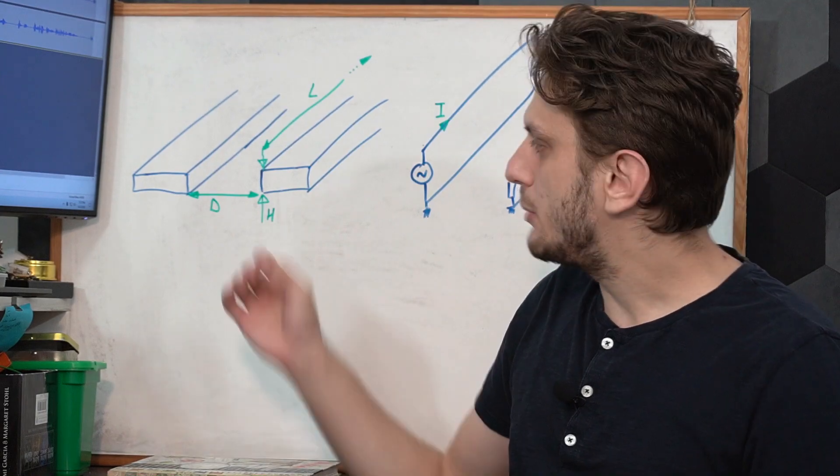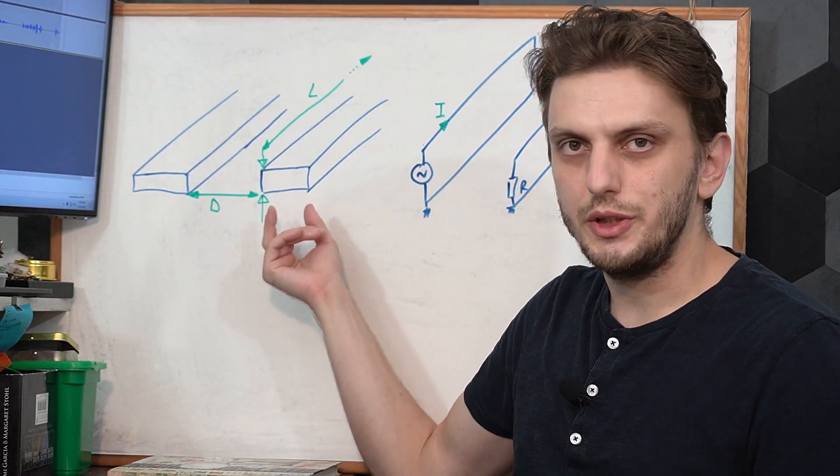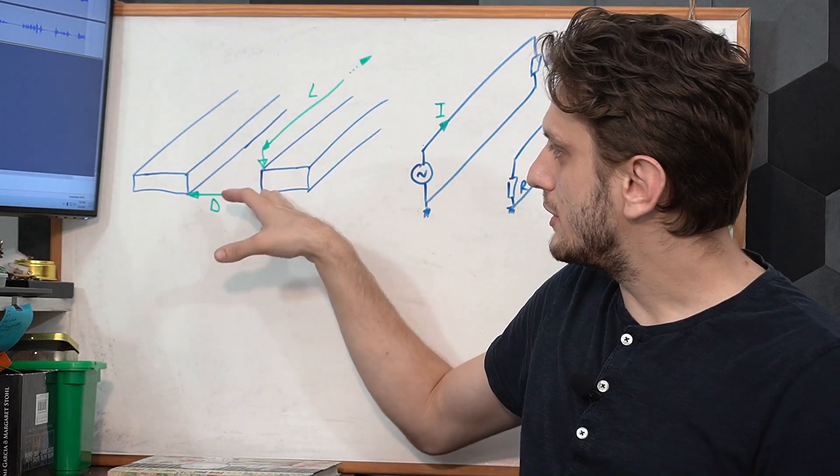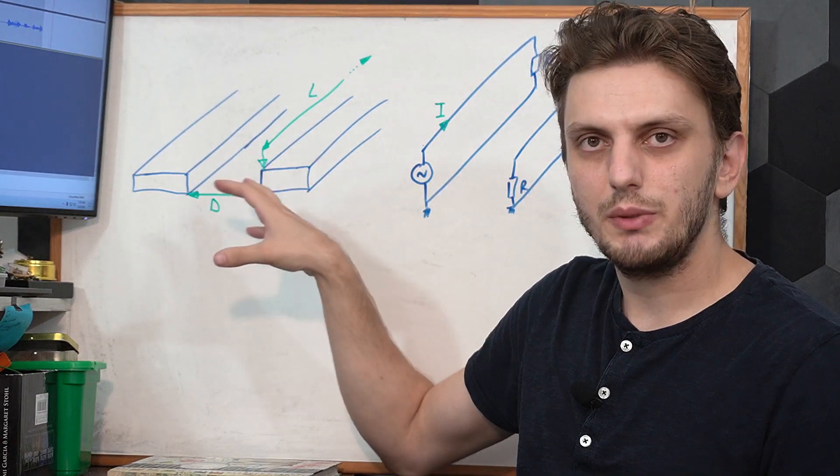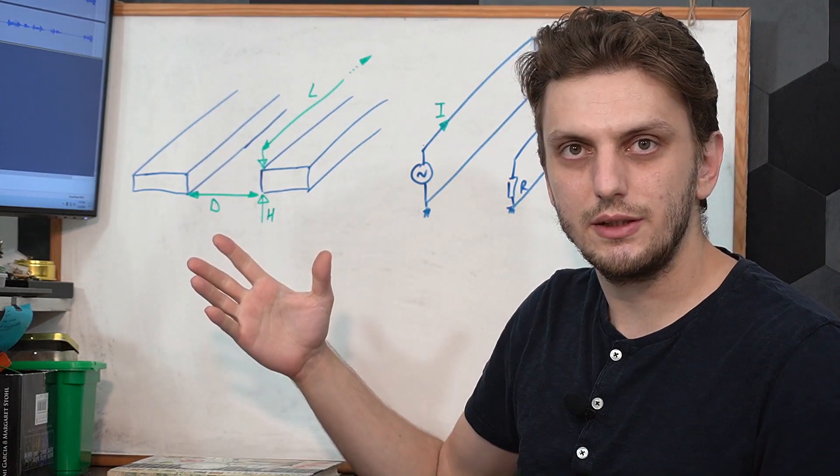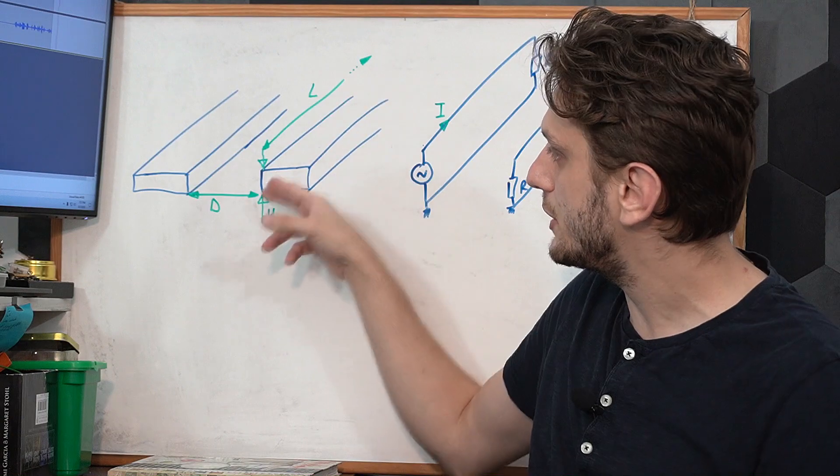Now, we don't really care about how wide the trace is, we're only interested in these three dimensions, because these basically show us that the trace has a certain surface area to the side.